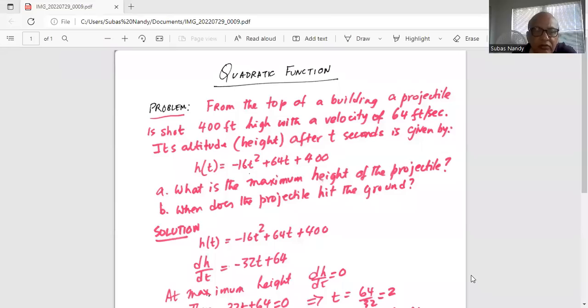From the top of a building, a projectile is shot 400 feet high with a velocity of 64 feet per second. Its altitude height after t seconds is given by h of t, h is a function of t, minus 16t squared plus 64t plus 400. What is the maximum height of the projectile? When does the projectile hit the ground?